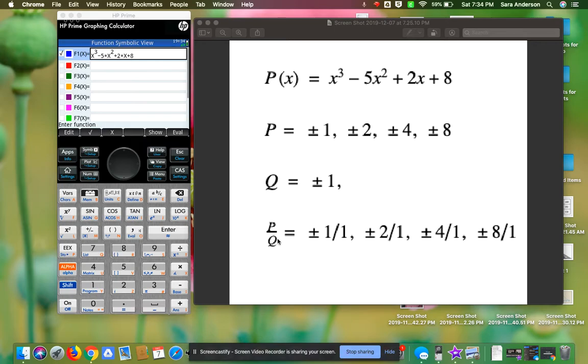To list the rational roots, we put the p factors over the q. In this case, there's only one q, so we have ±1, ±2, ±4, and ±8. I put the fractions here just so you can see it, but you wouldn't need to write 1/1, 2/1, 4/1, and 8/1. How it's listed is fine. However, if q had more factors, then I would need to see them listed as fractions as well.